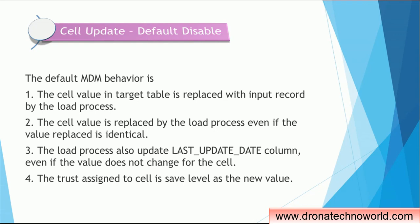If we don't enable the cell update in Informatica MDM, the default property is disabled. When we disable this property, the cell value in the target table — that is the base object table — is replaced with the input record by the load process. The input record comes from the staging table. The trust recalculation also happens on that record even if there is no change in the record.